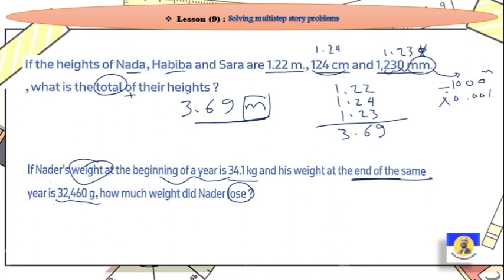We need to subtract. First, make the units the same. If this is kilogram, then that should be kilogram too: 32.46. Now we make minus. Be careful, 34.1 goes on top and 32.46 below. 0 minus 6 can't be, so borrow: 10 minus 6 equals 4. The 4 becomes 3, and 10 minus 4 equals 6. Point. This 3 minus 2 is 1. So the final answer is 1.64 kilograms.